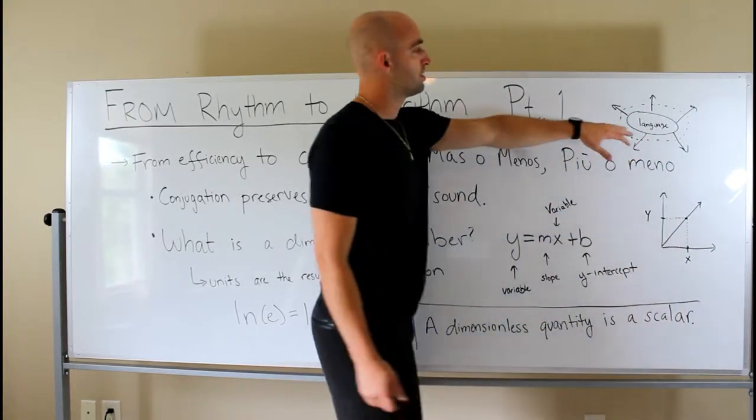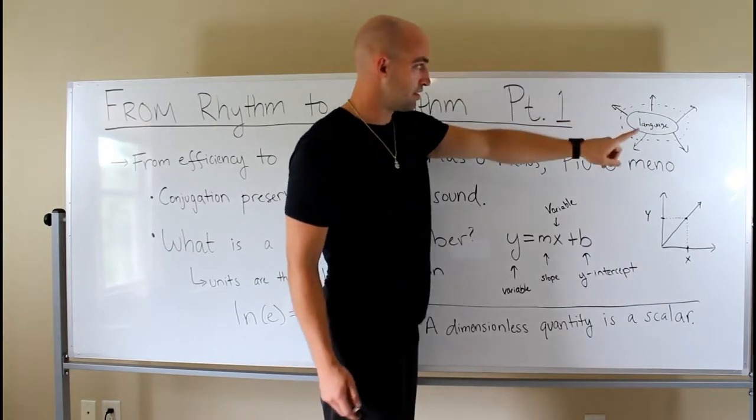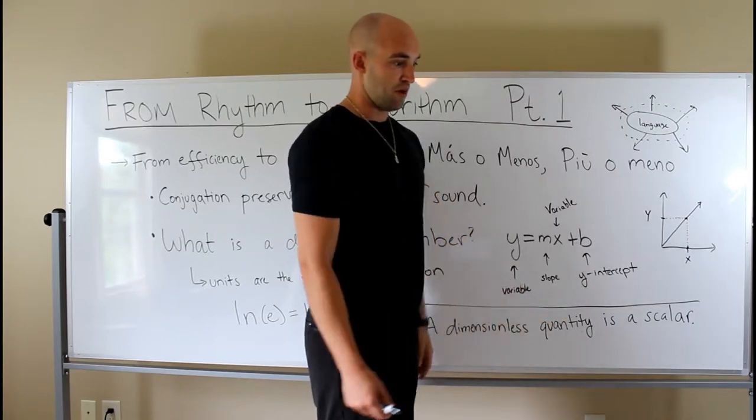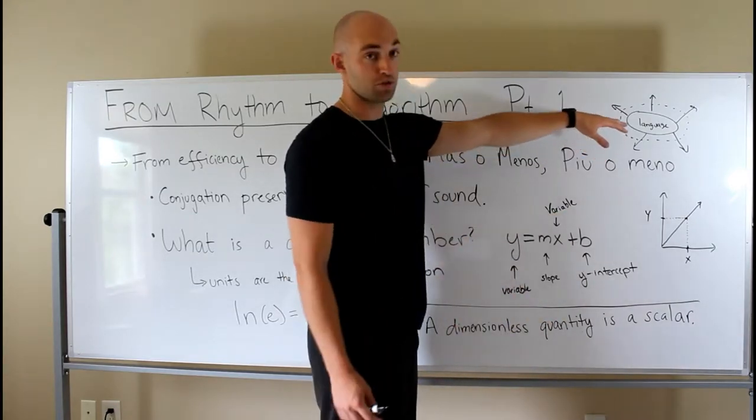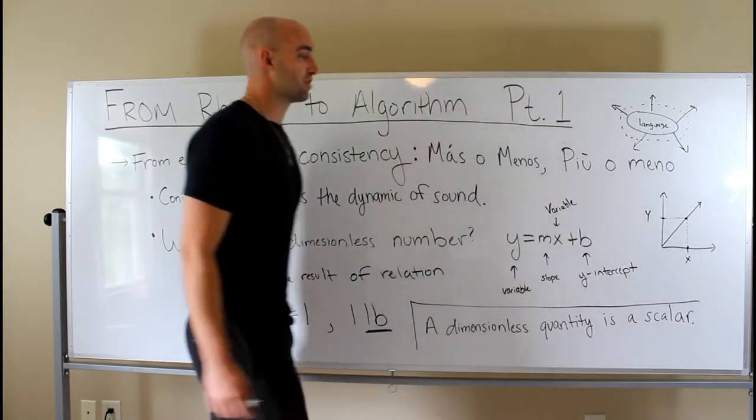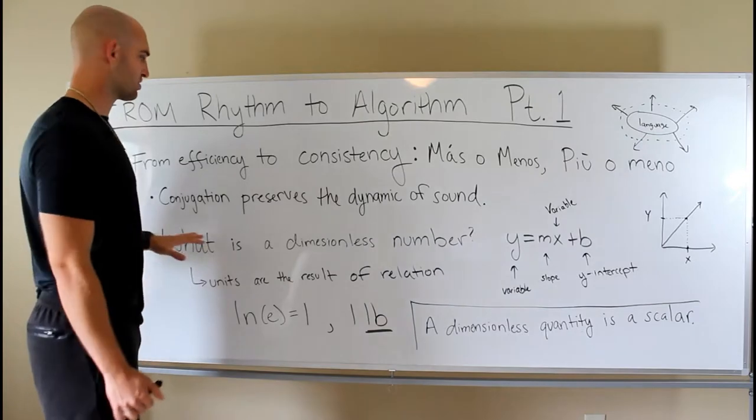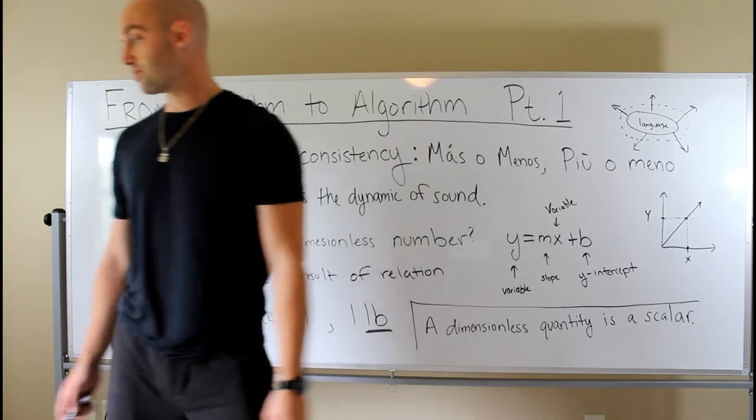So up here, I just have a little circle that says language and an arrow is pointing away. That's simply to represent time evolution, right? Humanity evolved on different continents at different times at different rates. Language spread out, but all language is related. I want to talk a little bit about how I do mathematics first. I have conjugation preserves the dynamic of sound. Let me show you.